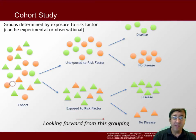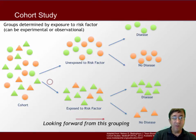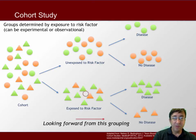Let's compare this to a cohort study. In a cohort study, the investigator does not assign group membership in a random way. We simply look for whether those unexposed to a risk factor and those exposed to a risk factor have a different outcome with respect to a disease, but the investigator does not control that exposure to the risk factor.